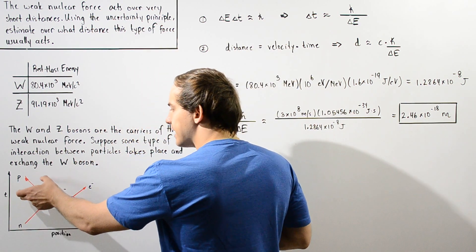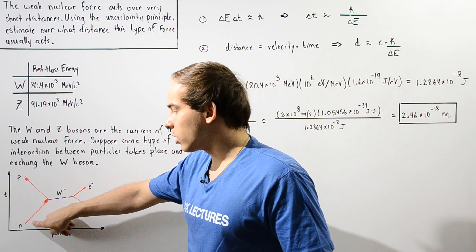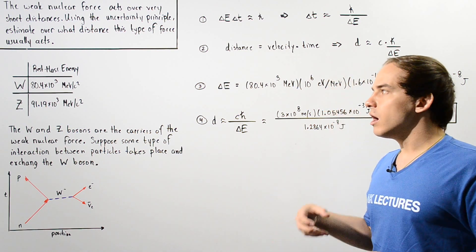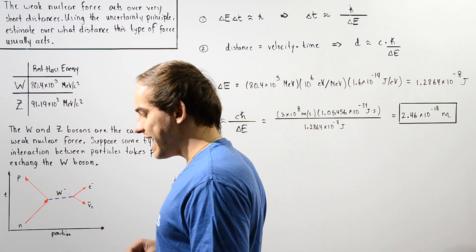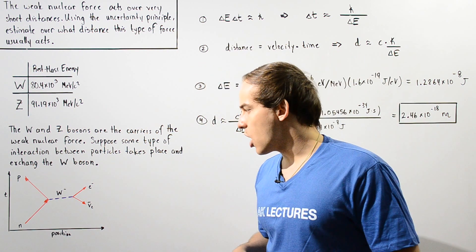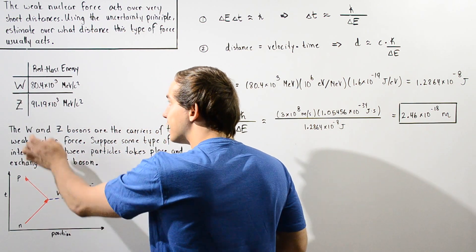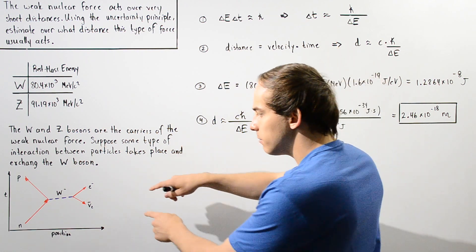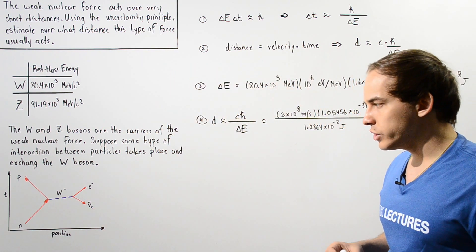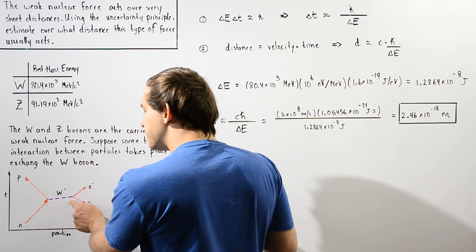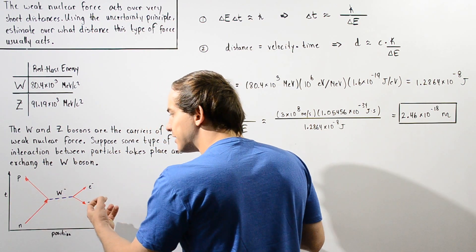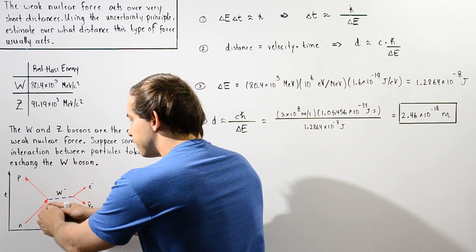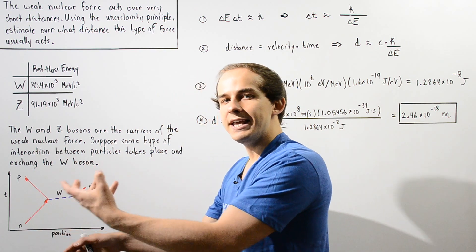We have a neutron that decays into a proton. One of the quarks of the neutron — the down quark — transforms into the up quark, forming the proton. In the process, it releases the W negative gauge boson to conserve electric charge. This W negative gauge boson, which has a specific rest mass energy, travels over some small interval before transforming into the electron and electron anti-neutrino. That distance is how far the gauge boson travels while mediating the weak nuclear force.